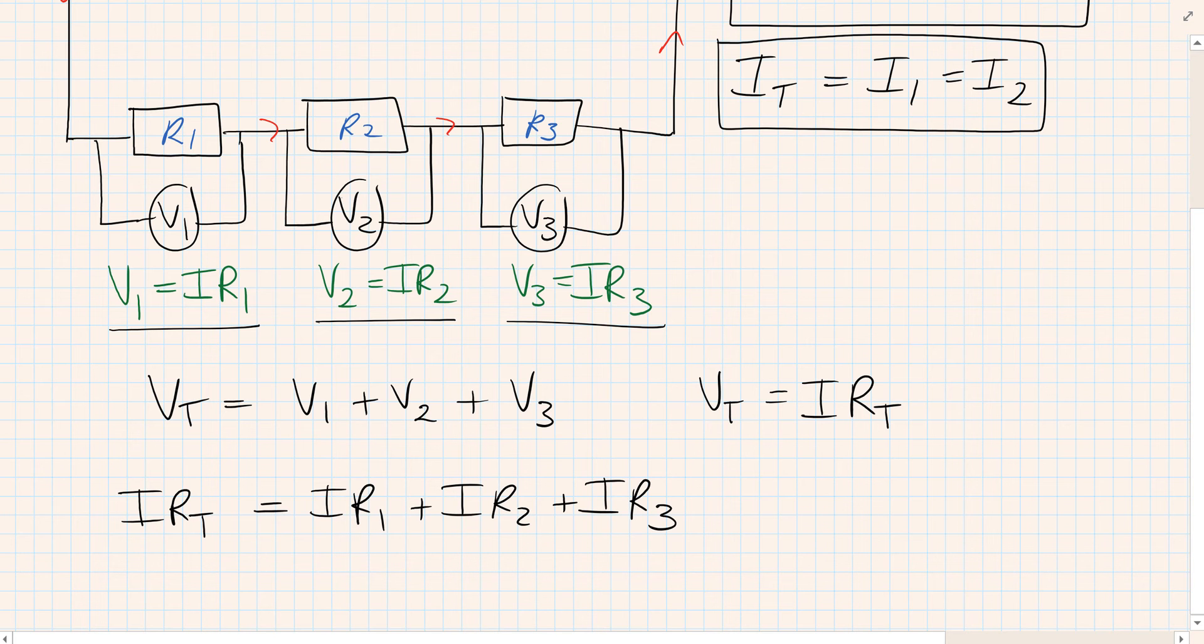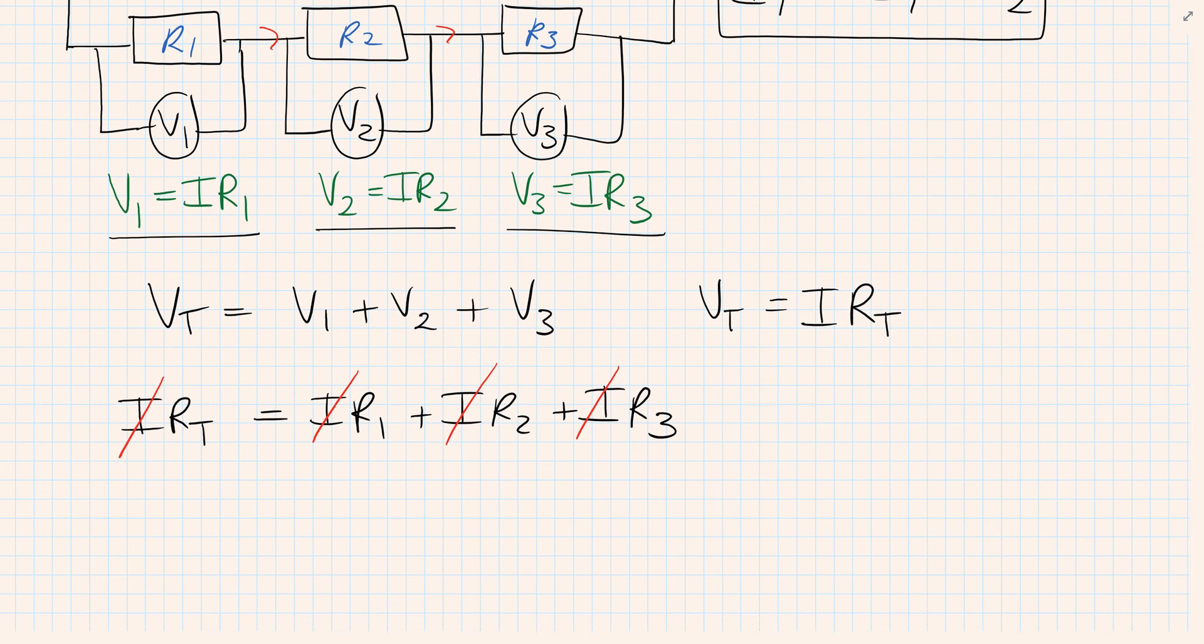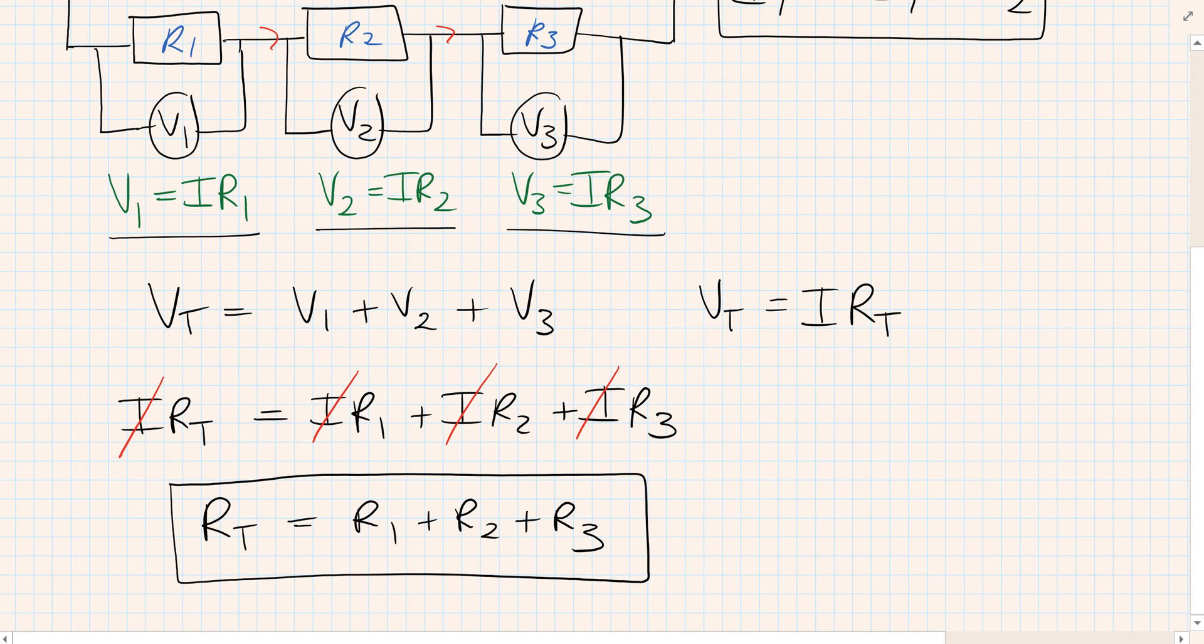This seems complicated but it really isn't, because you can see that we can cancel out all of the I's. After all that mathematics, we come to a really simple formula: to work out the total resistance in a series circuit, all you need to do is add up all the resistance values.